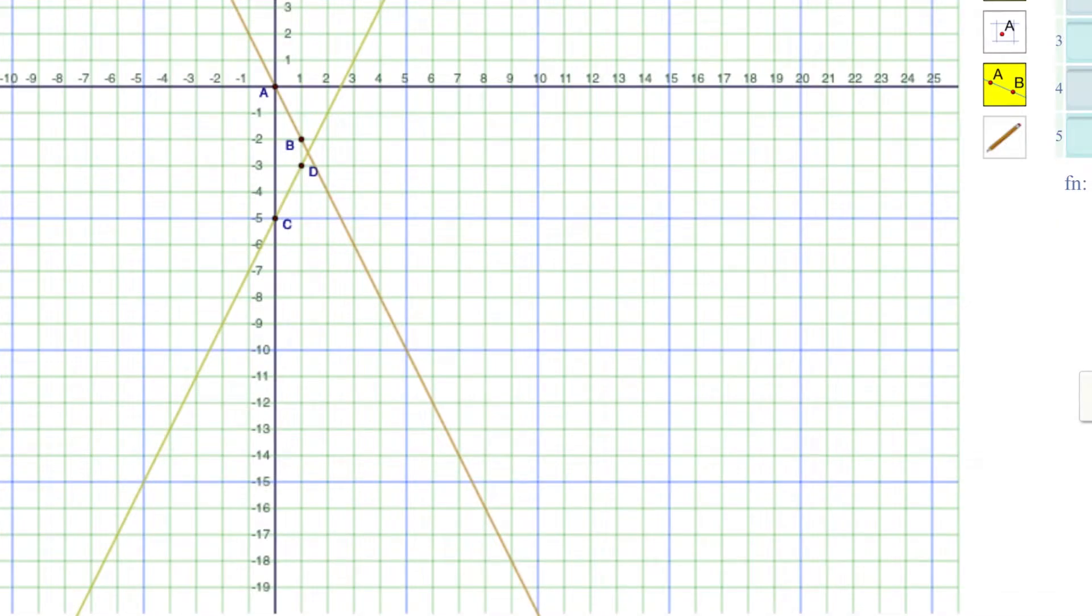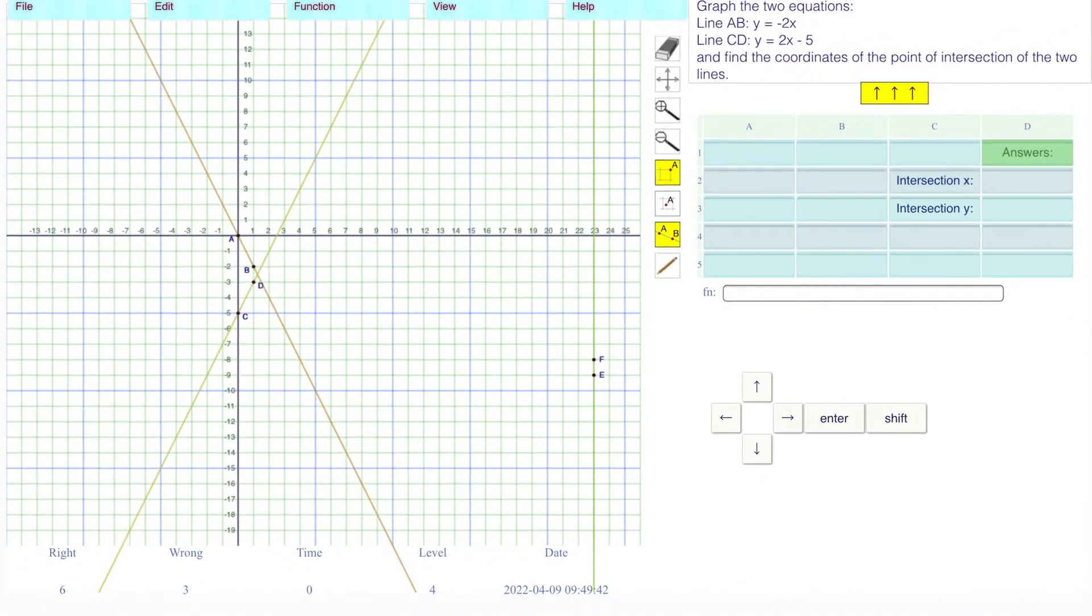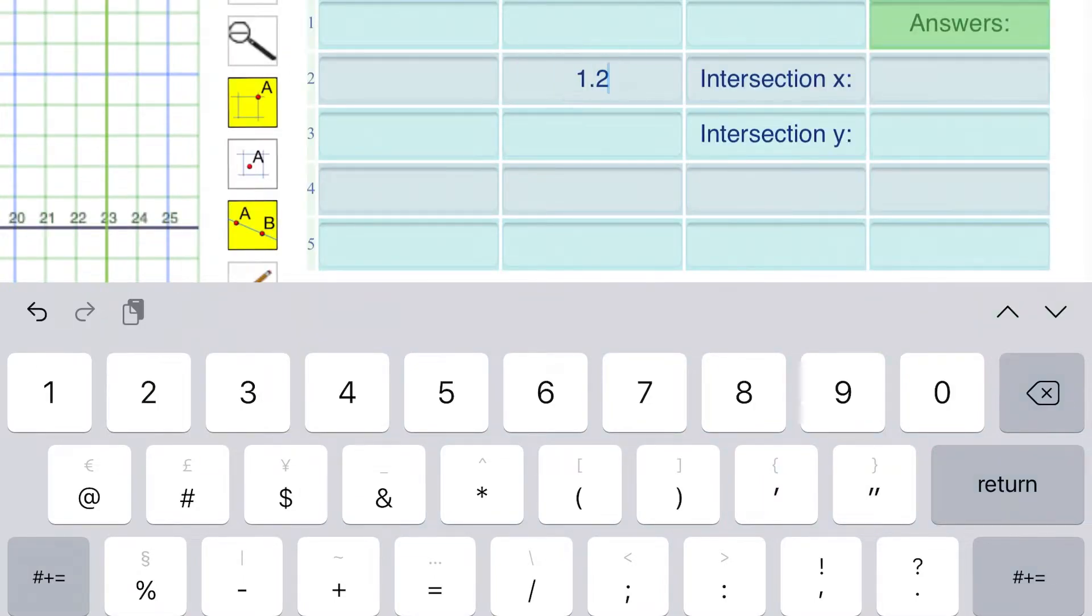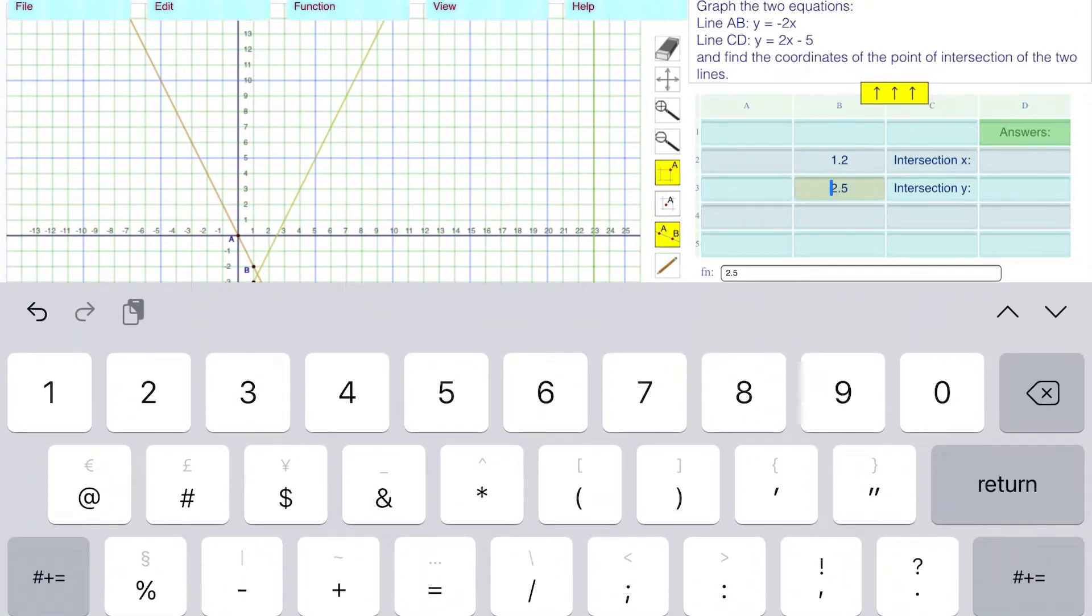We can see where the lines cross. It's 1 point something and a negative 2 point. It looks like negative 2.5. Something around 1.2, my guess is 1.2 in the x direction and negative 2.5 in the y direction.